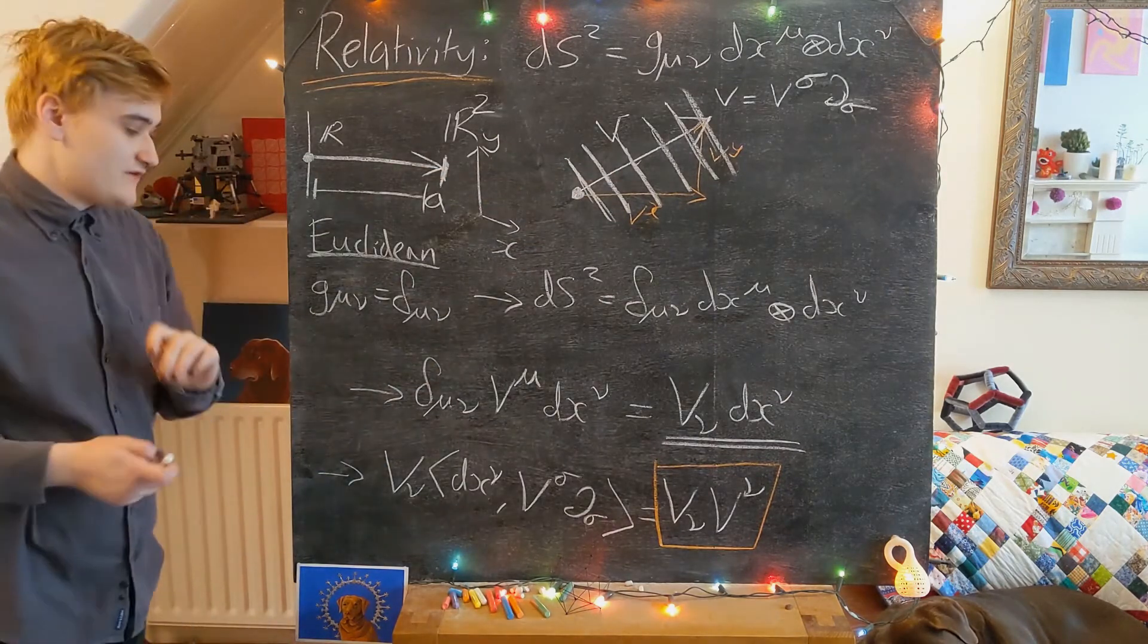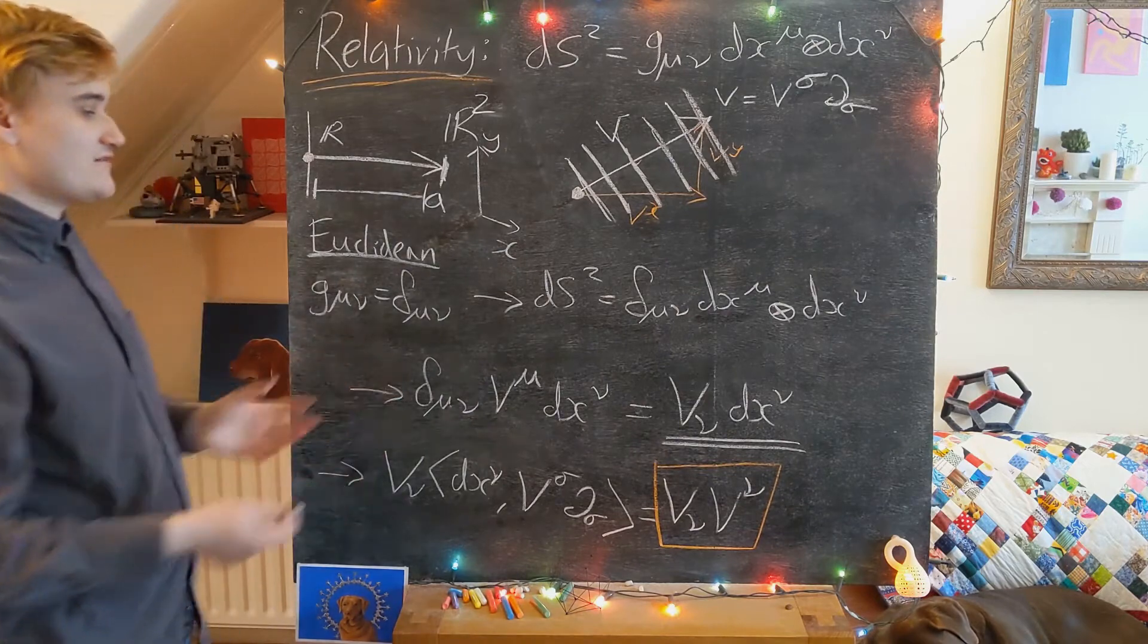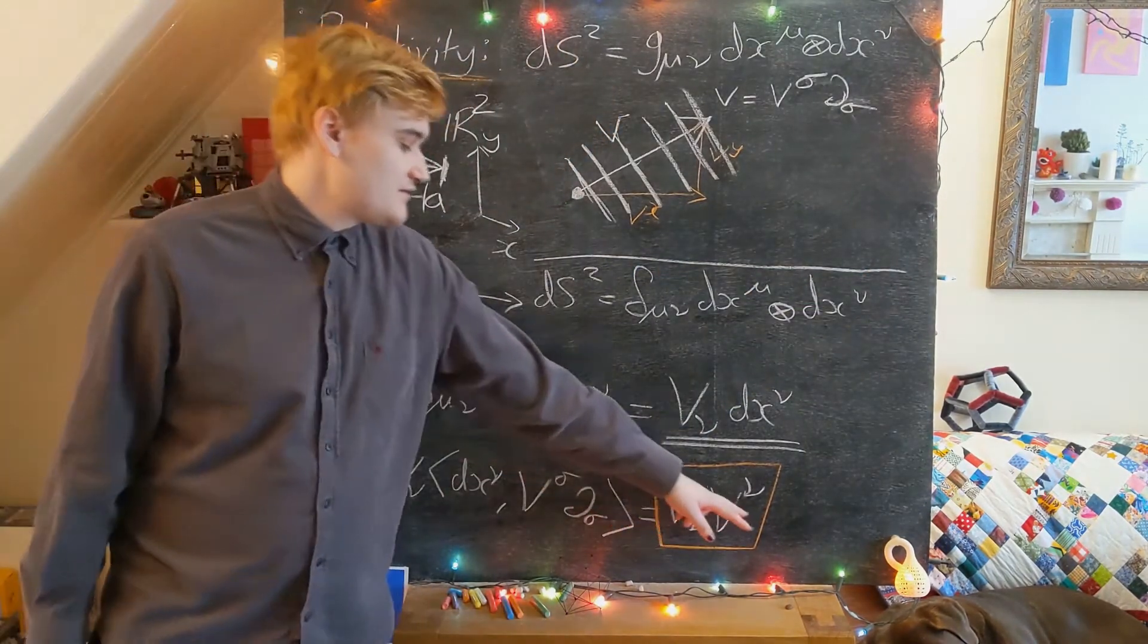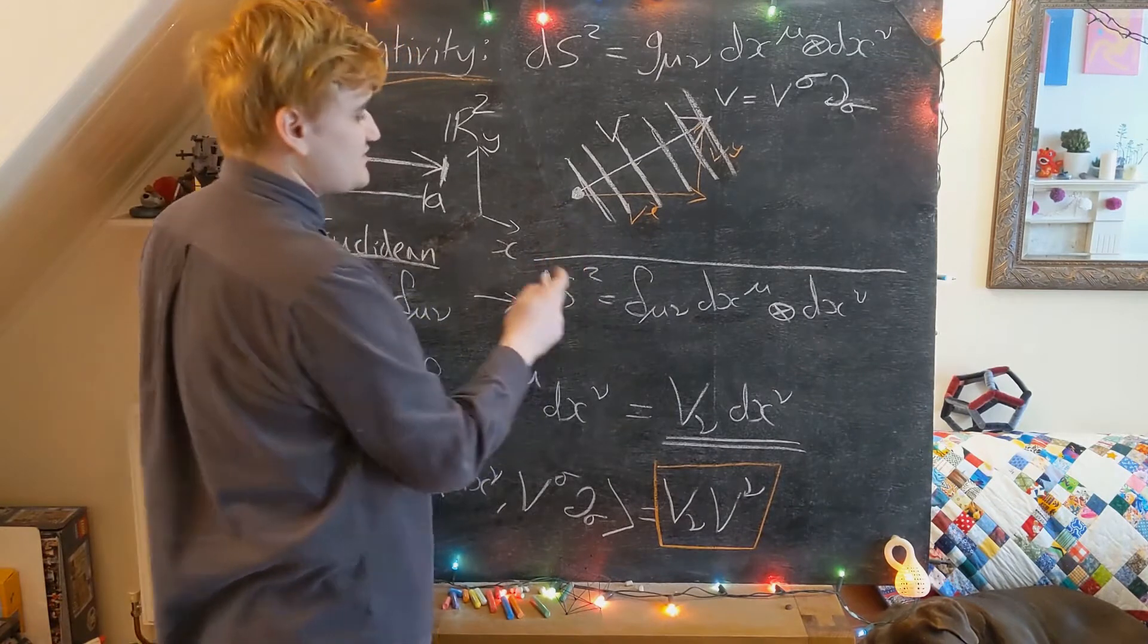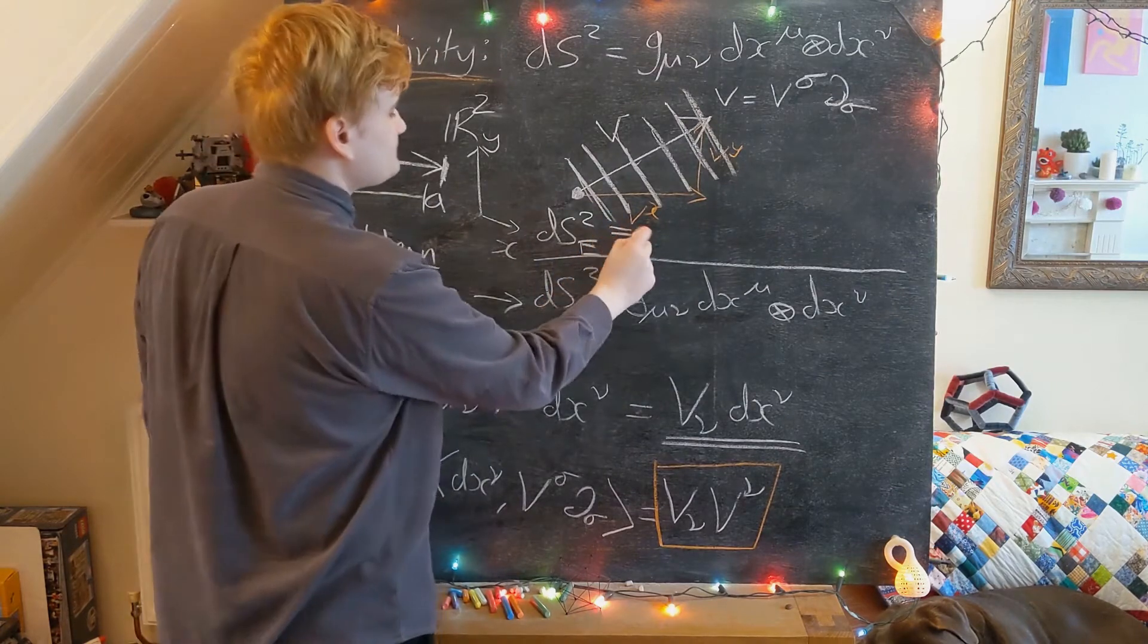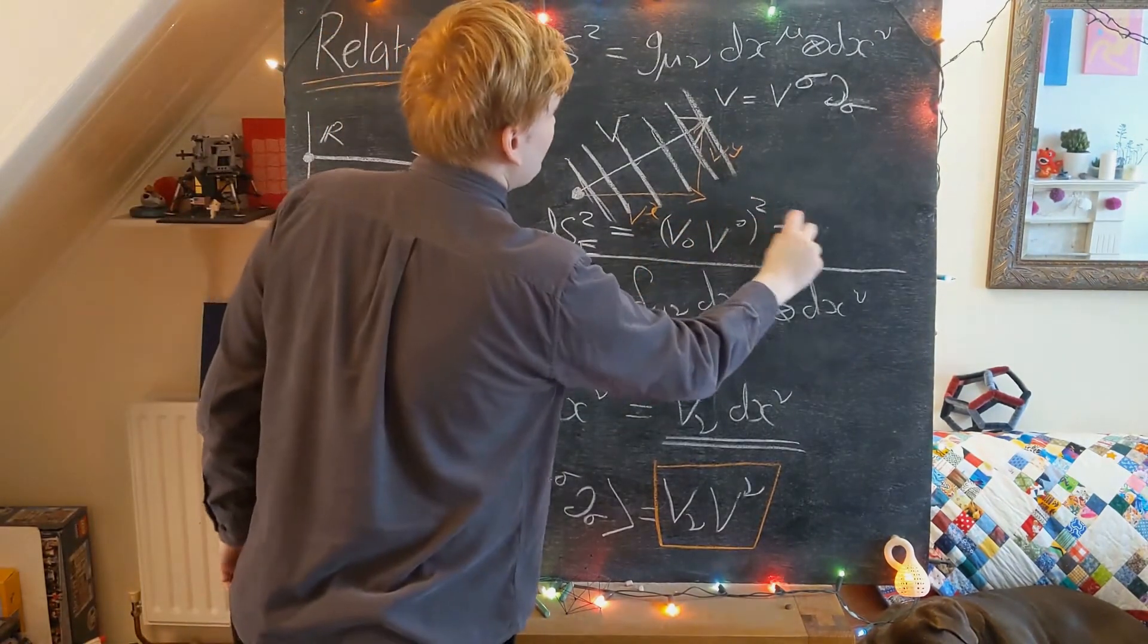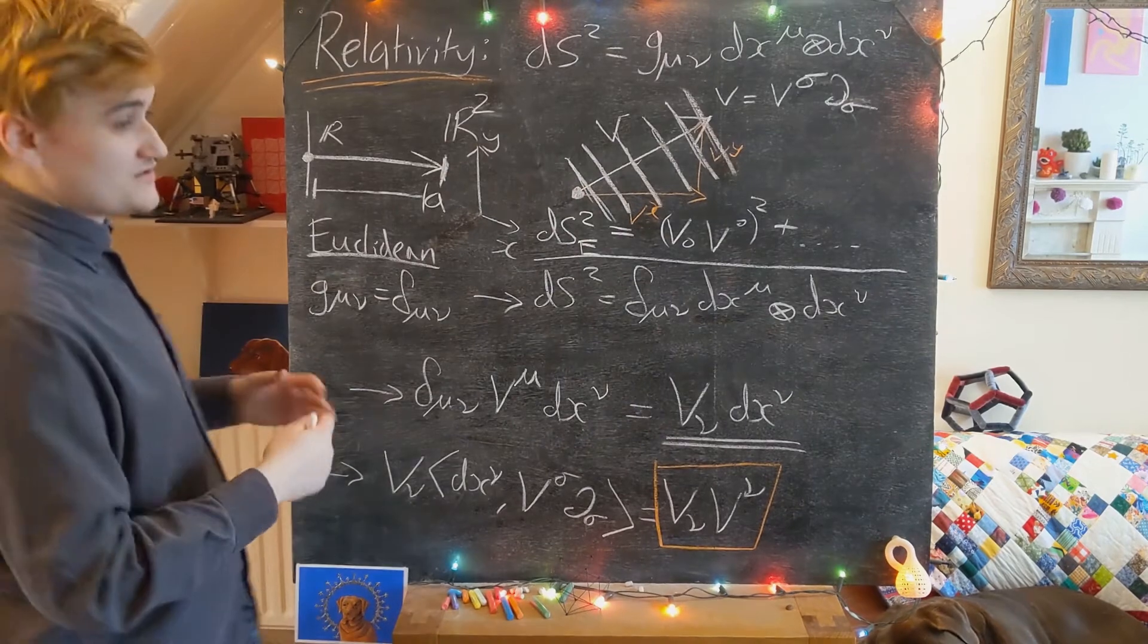And so what we now have to realize is that this Euclidean metric is essentially just reproducing Pythagoras' theorem. If we just now look at what this expression is saying, it's saying, okay, take the V⁰ and V⁰ components, multiply them together, and then add up the results. So we could just say that this ds² Euclidean, we just take our vector components and we square them, and then add together the results.